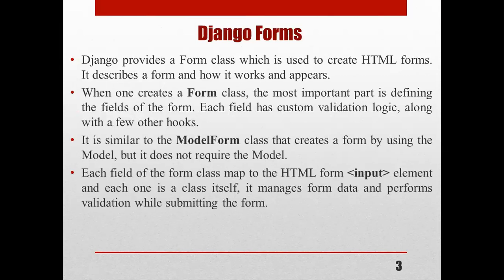We will start with Django forms. Django provides a form class which is used to create HTML forms. It describes a form and how it works and appears. When one creates a form class, the most important part is defining the fields of that form. Each field has custom validation logic along with a few other hooks. It is similar to the model form class but does not require the model.